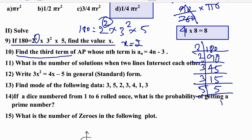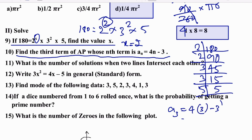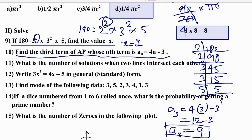Find the third term of an AP whose nth term is aₙ = 4n − 3. For the third term, put n = 3: a₃ = 4(3) − 3 = 12 − 3 = 9. So a₃ = 9.